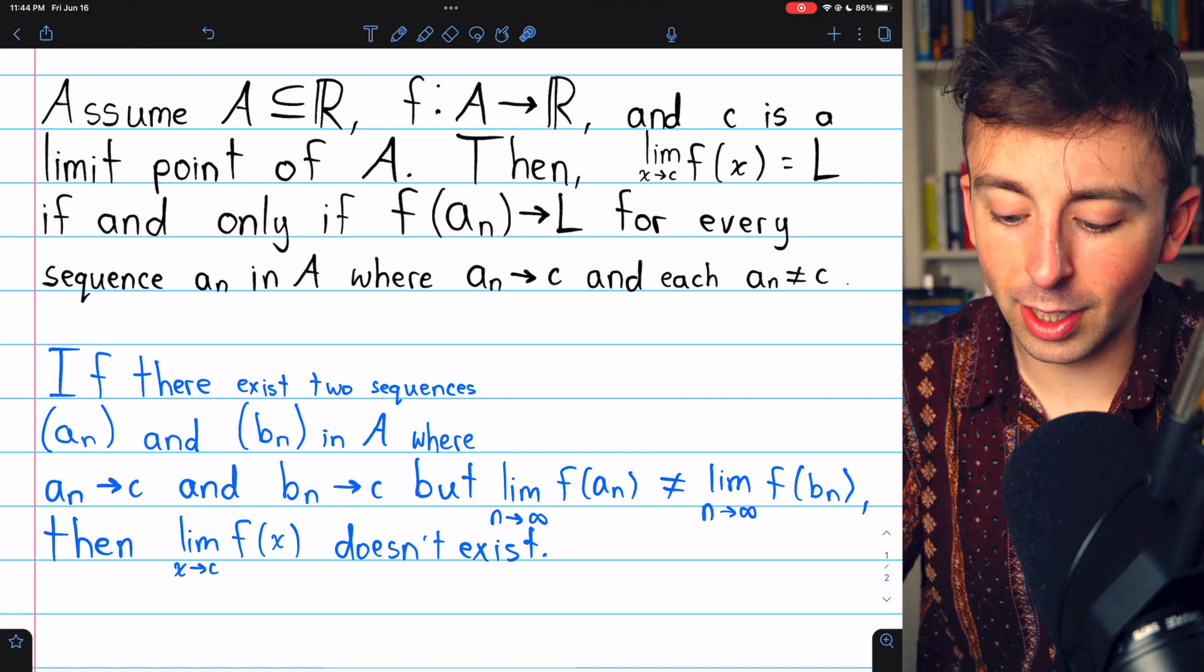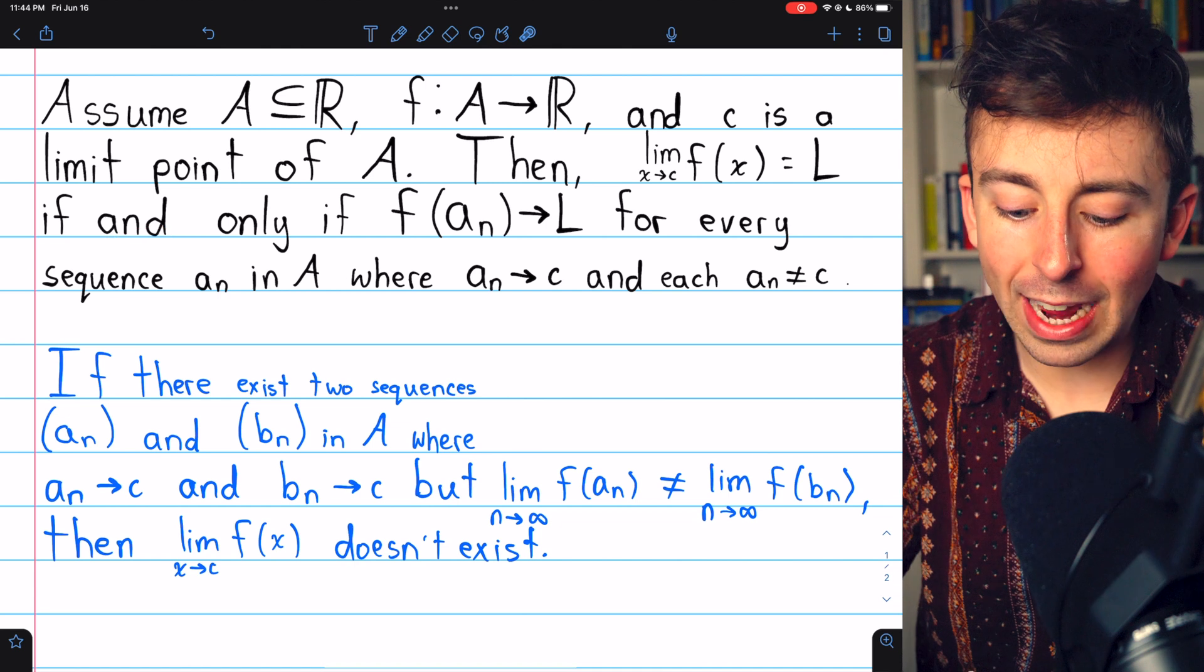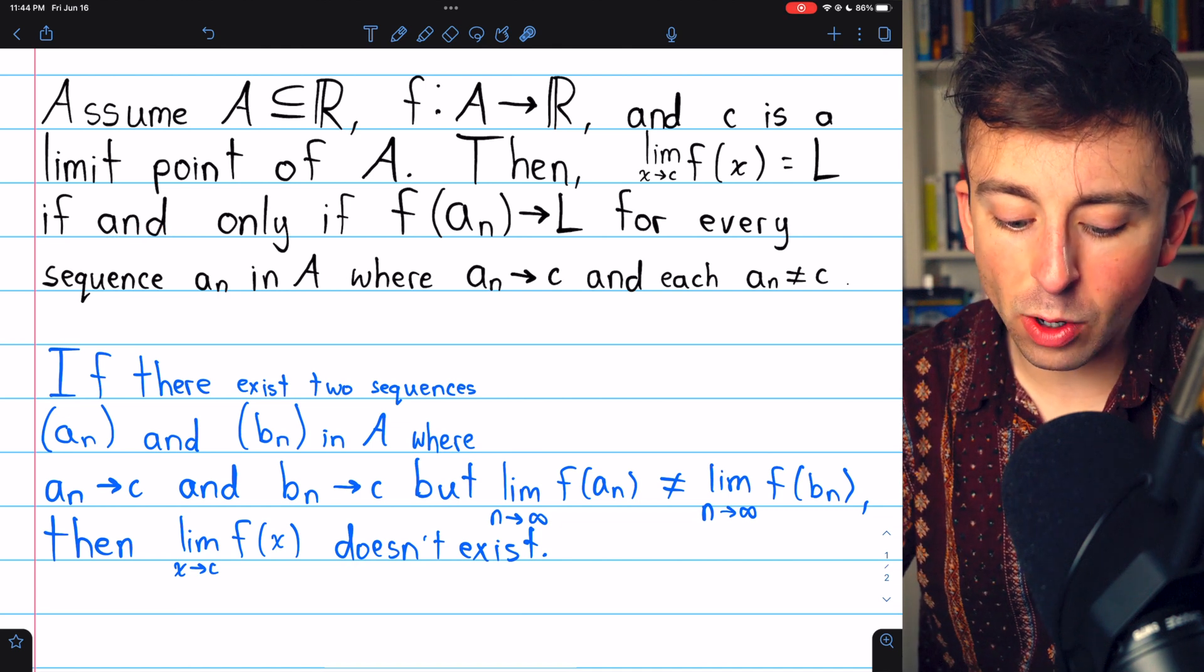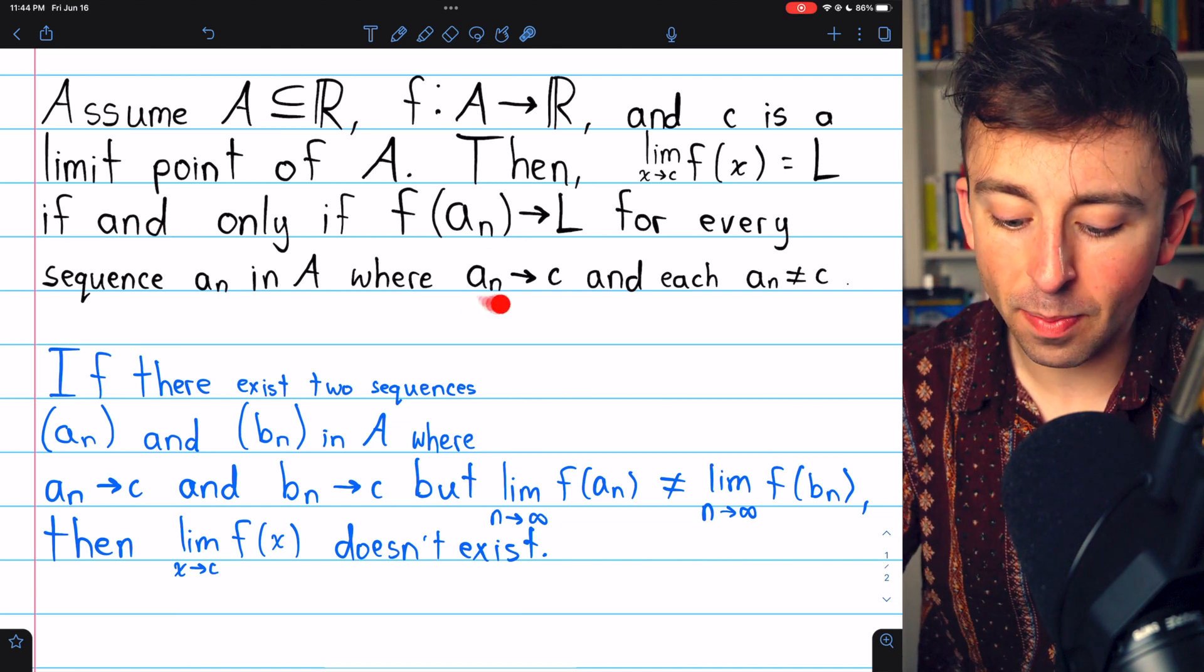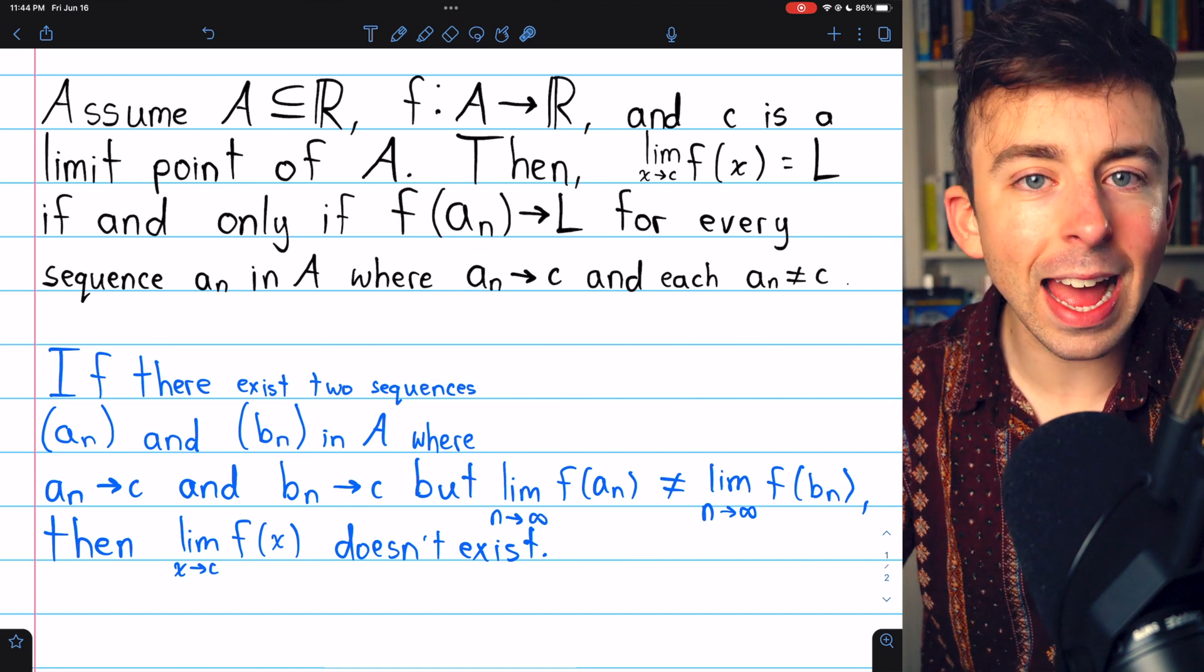The result that we proved was that the limit of f(x) as x approaches c must equal L if and only if every sequence converging to c has a sequence of images under the function that converges to L.